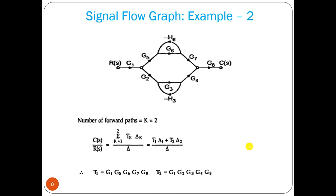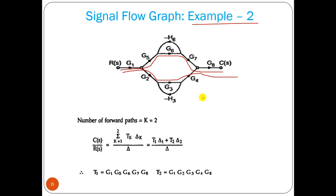This is Example 1. Now let us take another example. We have two forward paths: one going this way, and another going this way. The formula is T1*delta1 + T2*delta2 divided by delta. T1 = G1*G5*G6*G7*G8 and T2 = G1*G2*G3*G4*G8.